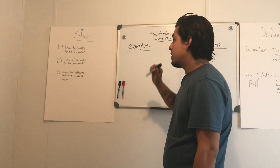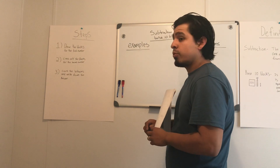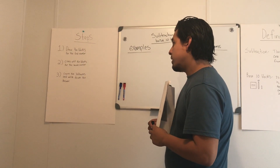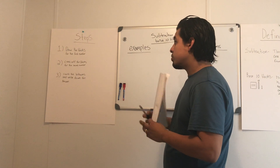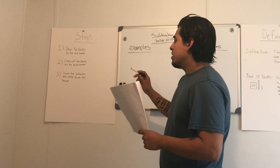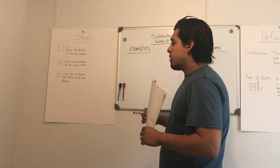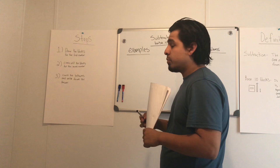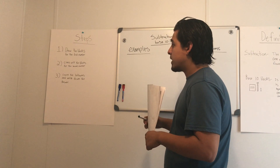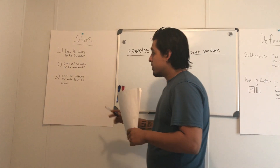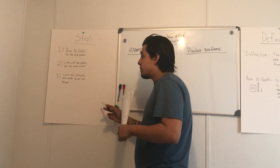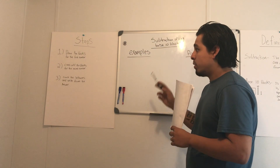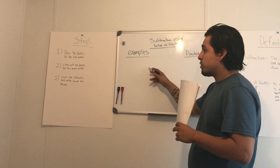The steps we're going to be going over for subtraction using base 10 blocks: the first step is to draw the blocks for the first number. The second step is to cross off the blocks for the second number. The third step is to count the leftovers and write down the answer. I'll explain what all this means when I show you an example.